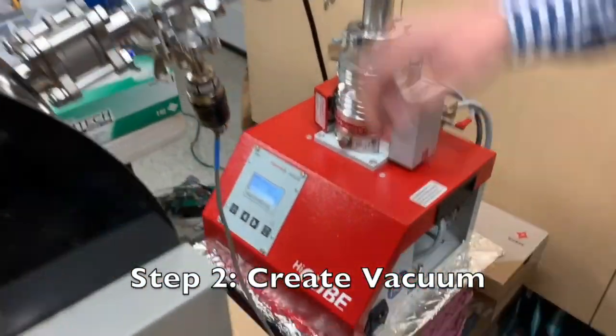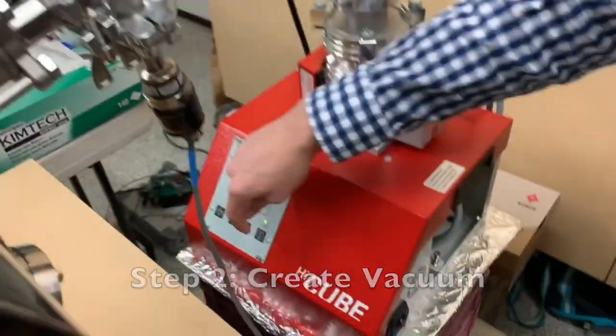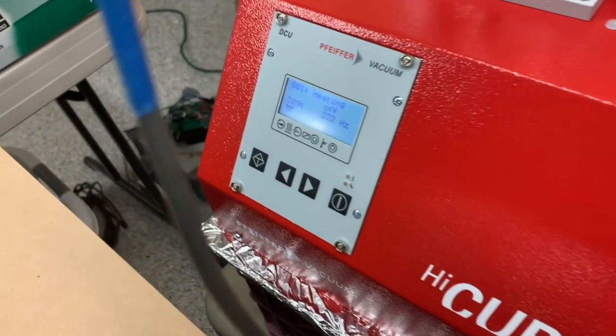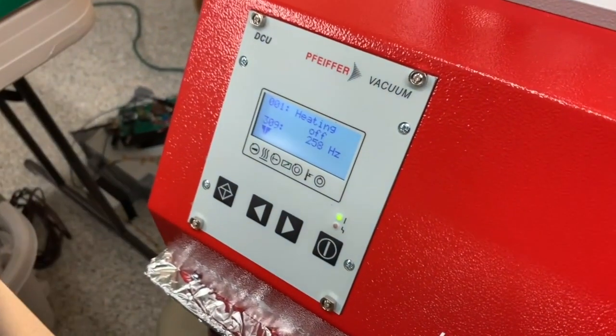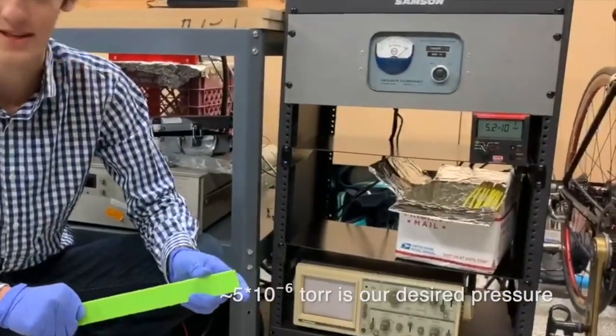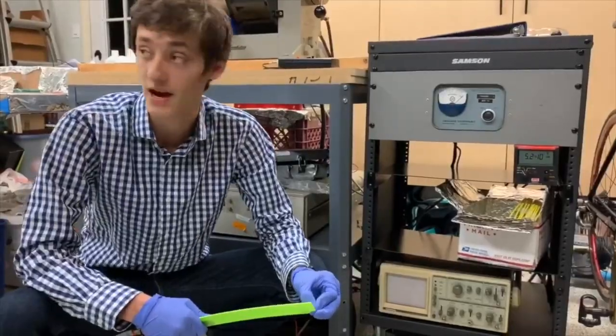Step two: the vacuum system creates a free path for the protons to accelerate. Here is how to turn on the vacuum. We've got about 5.2 times 10 to the negative 6 Torr. So now that we have the vacuum down, let's turn the magnet on.